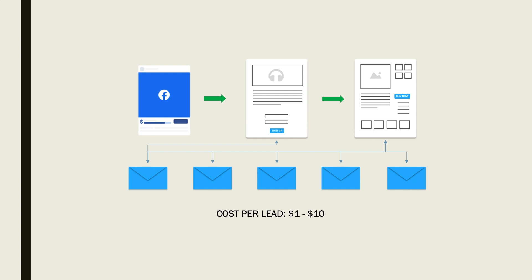The method most people are familiar with is having a lead magnet in exchange for the email. But it costs you anywhere from one to ten dollars per email depending on your niche. Let's say it costs you two dollars per email — to get 10,000 subscribers that's going to cost you twenty thousand dollars. You'll make that money back by monetizing your list, but it takes a while to build because you're spending money per email.